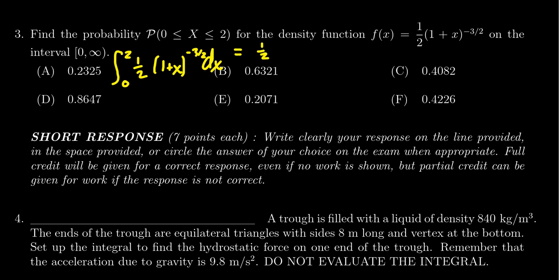The 1/2 comes out front. You raise the power of (1+x) by adding 1 to -3/2, getting -1/2. Then divide by -1/2, which makes the 1/2 terms cancel, leaving a negative sign, evaluated from 0 to 2.